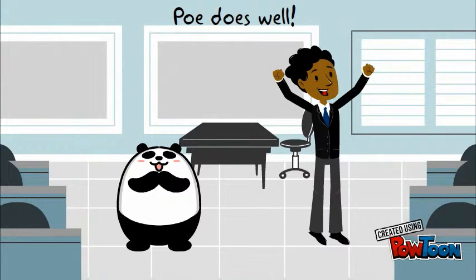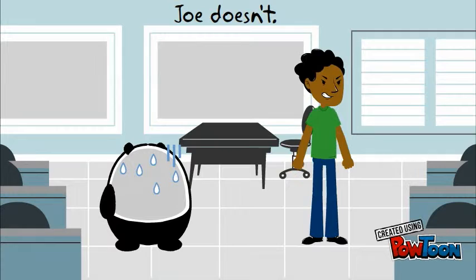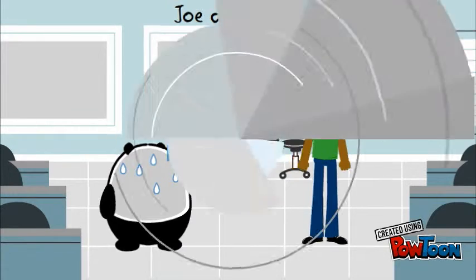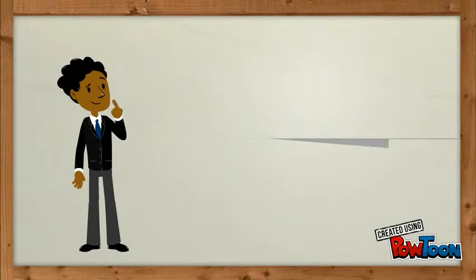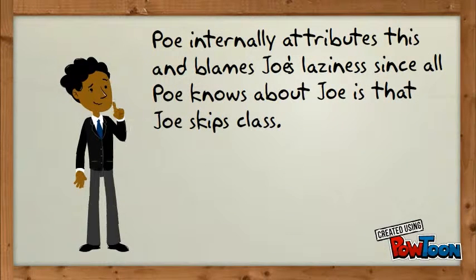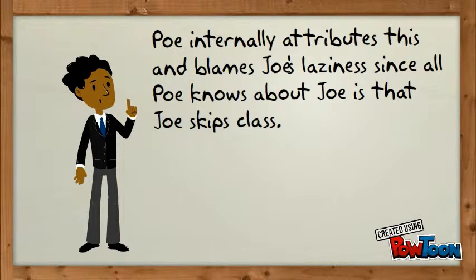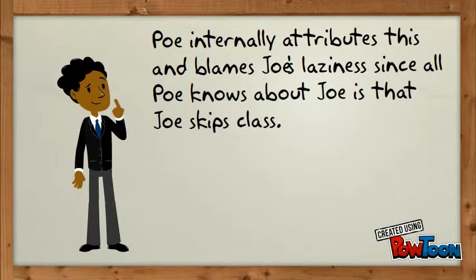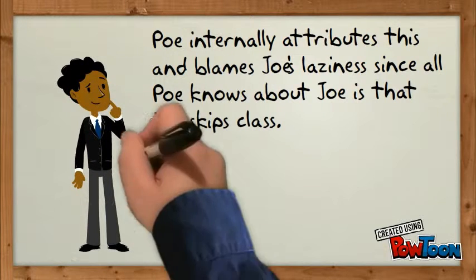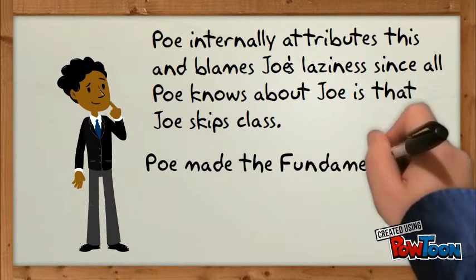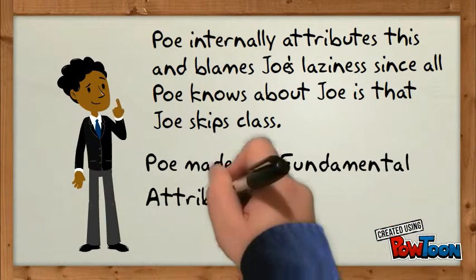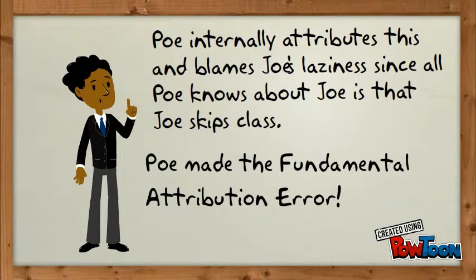Poe does well. Joe, on the other hand, doesn't. Poe internally attributes this and blames Joe's laziness, since all Poe knows about Joe is that Joe skips class. Poe made the fundamental attribution error.